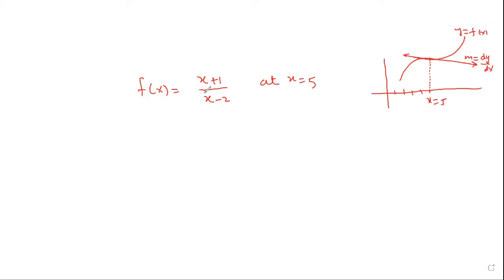We need to find the slope of that tangent line, which equals dy/dx where y is the function. What we need to do is differentiate the function using rules of differentiation, then plug in x equals five. The numeric value we get after simplification is the slope of the tangent at that point.